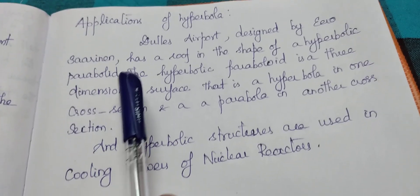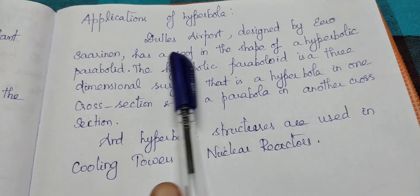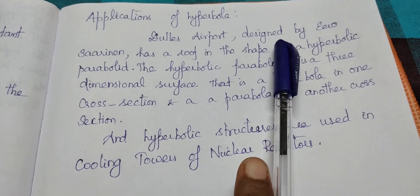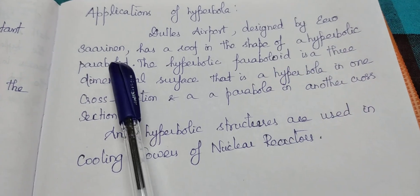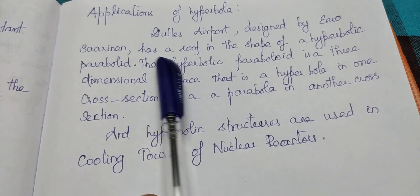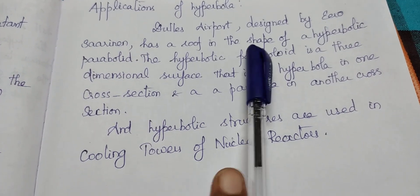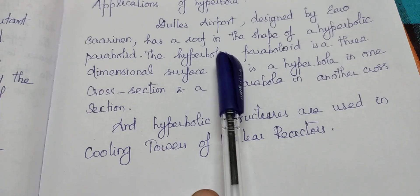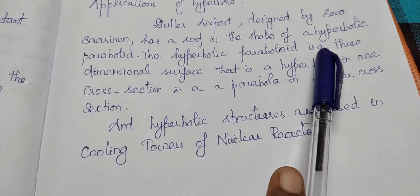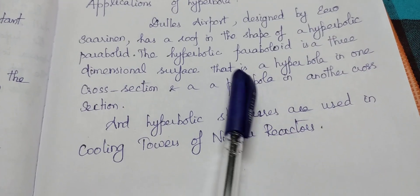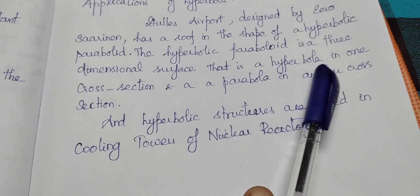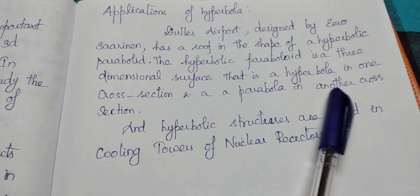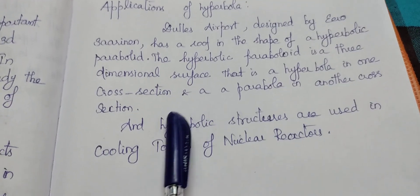As soon as applications of hyperbola: Dulles airport, designed by Eero Saarinen, has a roof in the shape of a hyperbolic paraboloid. The hyperbolic paraboloid is a three-dimensional surface that is a hyperbola in one cross-section and a parabola in another cross-section.